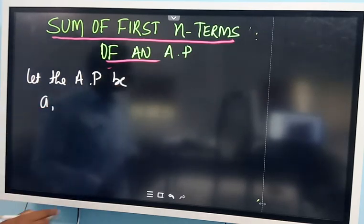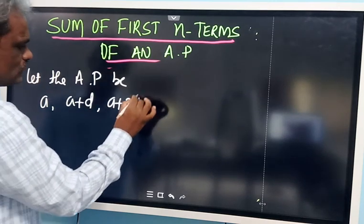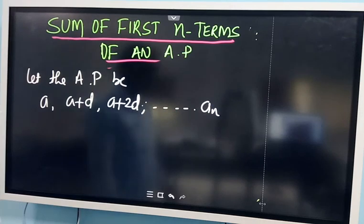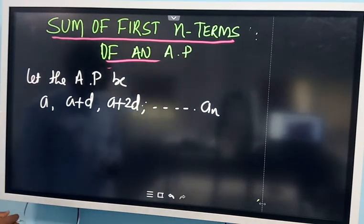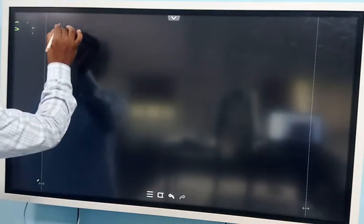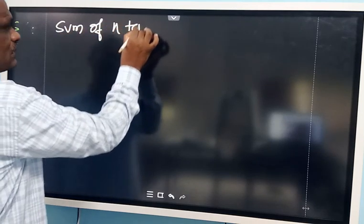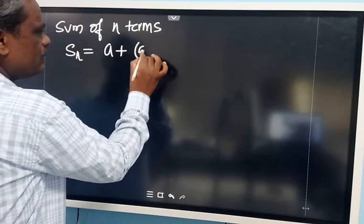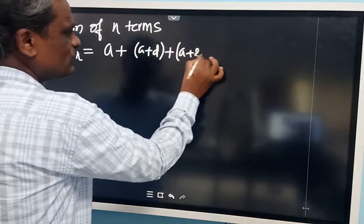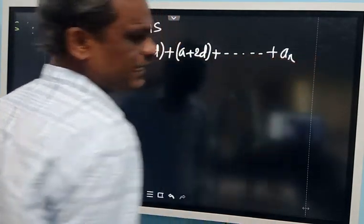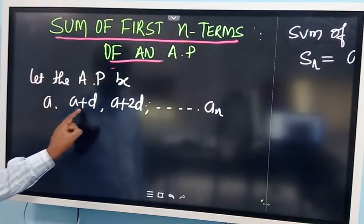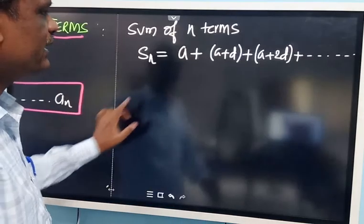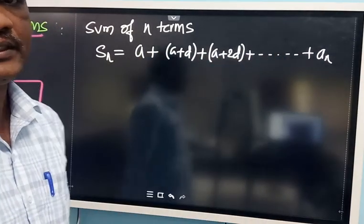Let the AP be: first term A, second term A plus D, third term A plus 2D, and so on. The last (nth) term is AN. We want to find the sum of these N terms. So SN equals A plus (A plus D) plus (A plus 2D) plus ... up to AN — we want to add all these terms.